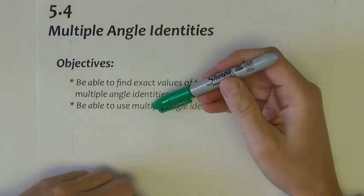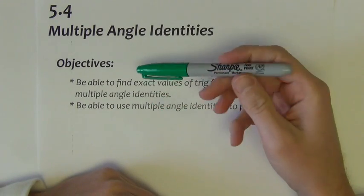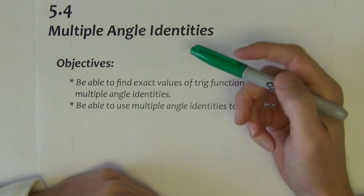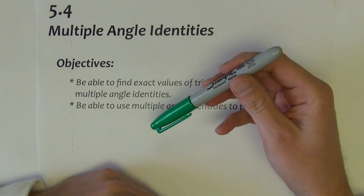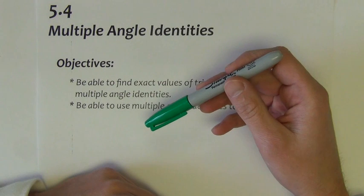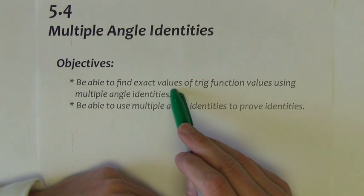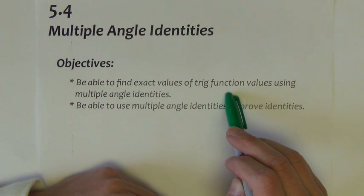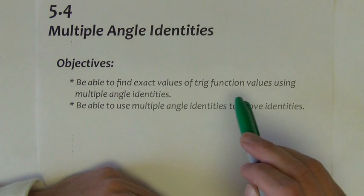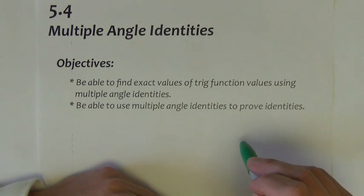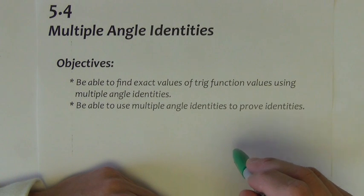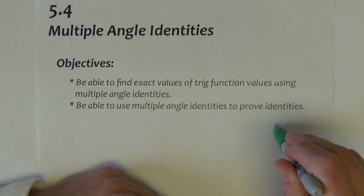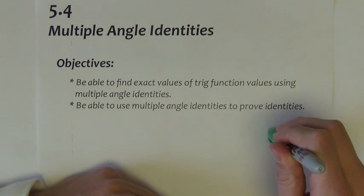Section 5.4 is called Multiple Angle Identities. In this lesson, we're going to go over two different sets of identities that kind of do what the sum and difference identities did in the last section. They're going to give us ways to find exact values of trig functions, trig function values that maybe are not already on the unit circle. Then we're also going to be able to expand on some of the identities that we can prove using these new multiple angle identities.